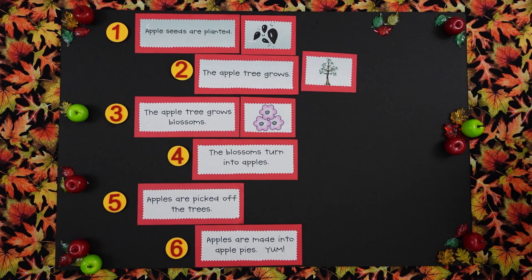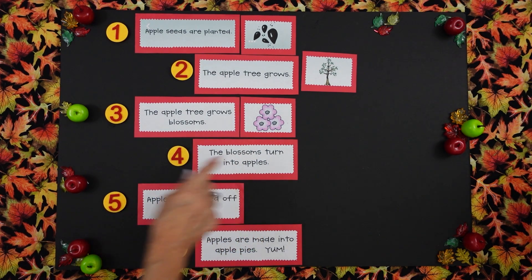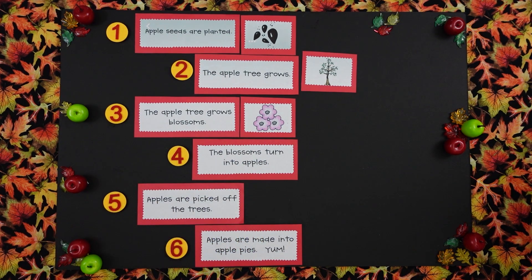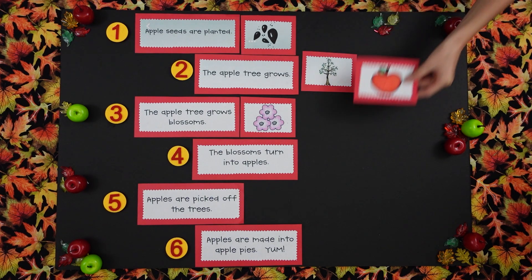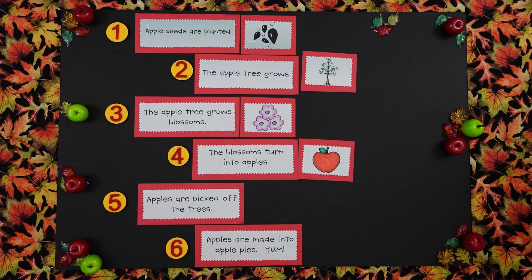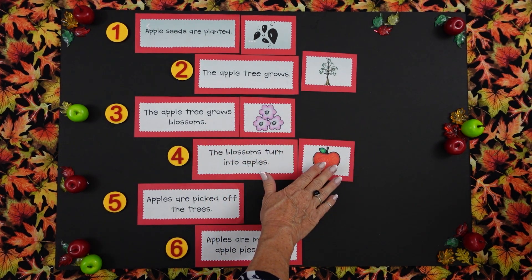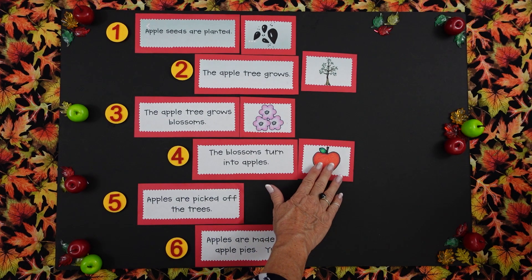Isabella, let's read number four together. The blossoms turn into apples. Will you put that by the sentence? The tree that made the blossoms has turned into apples. So wherever there's a blossom, that tells you there's going to be an apple there, right? Yes.